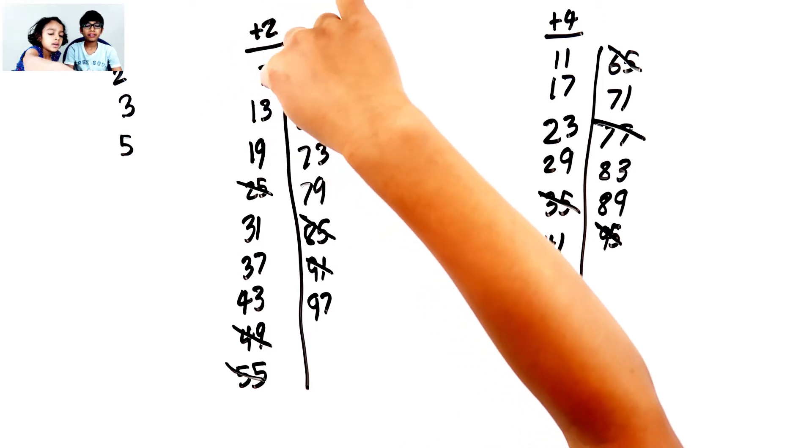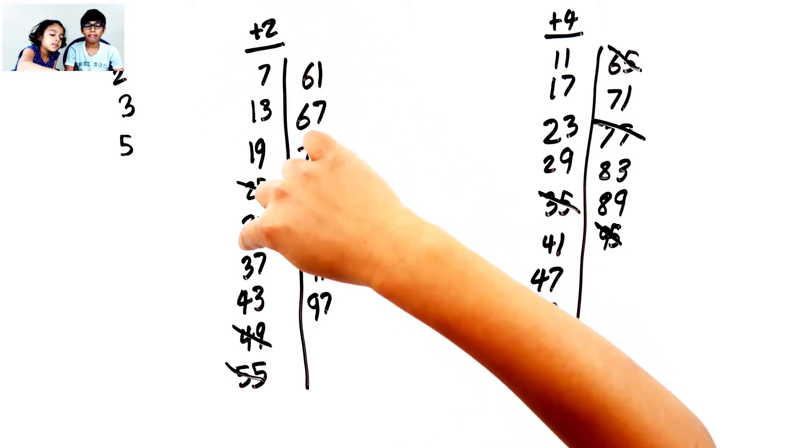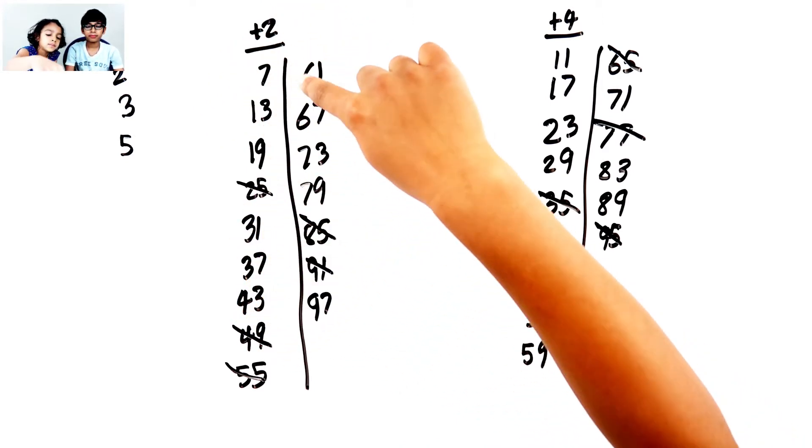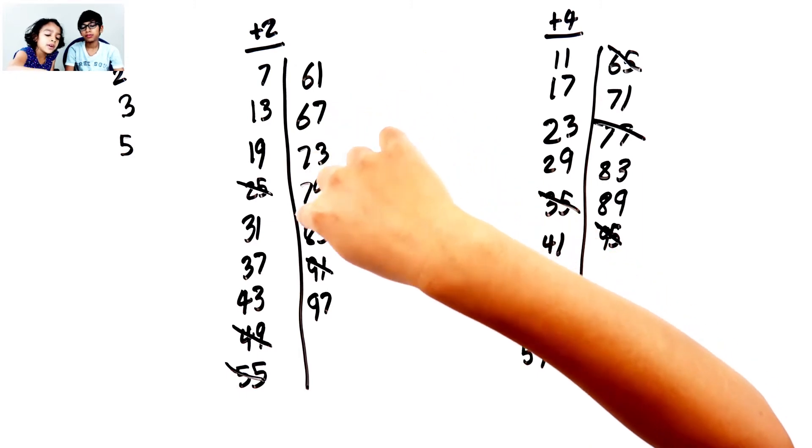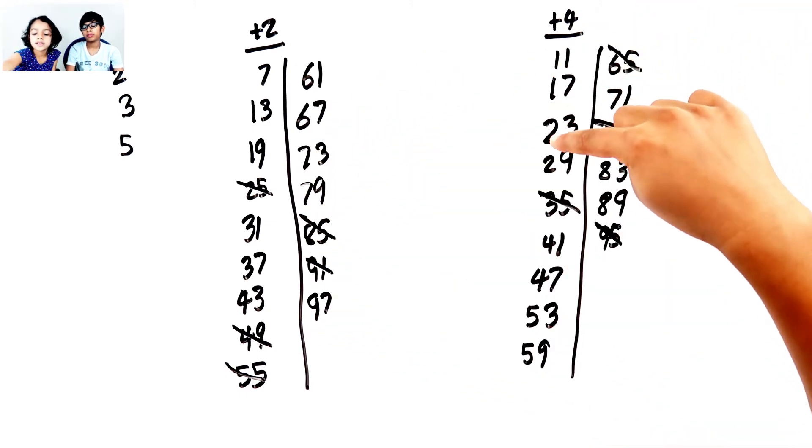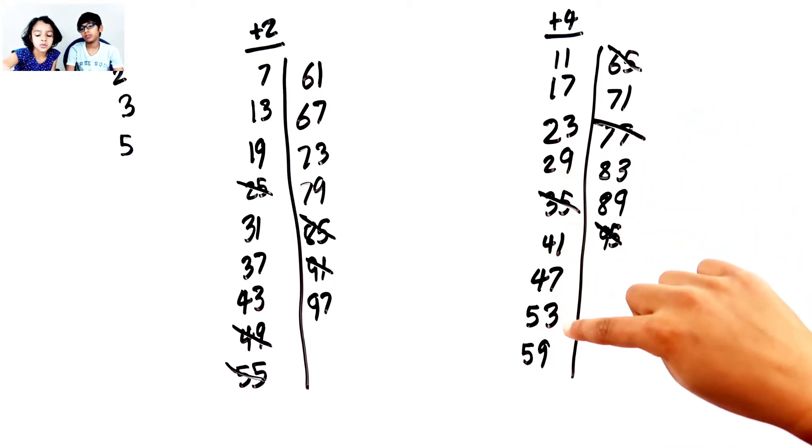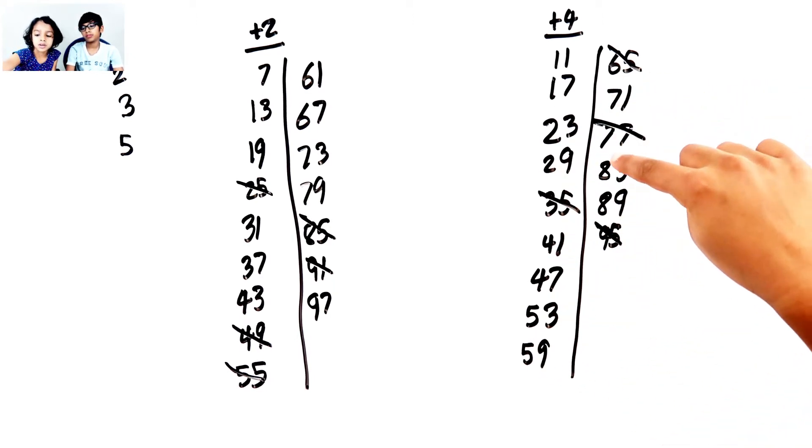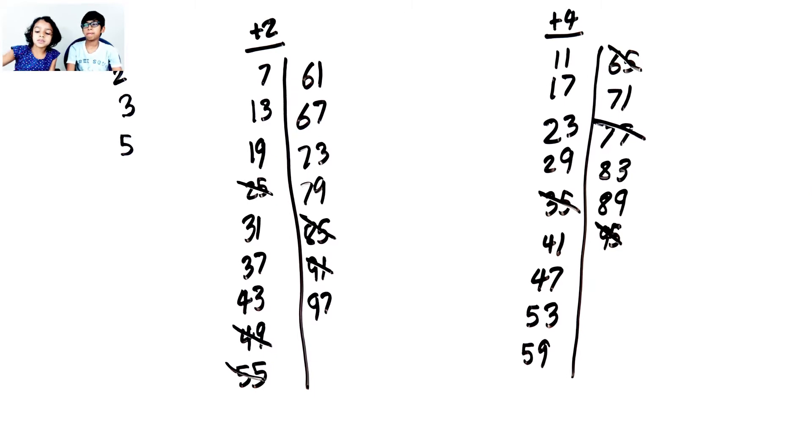They count from 1 to 25. There are 25 prime numbers.